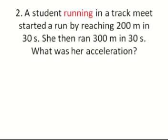Problem 2 is a bit more complicated. Number 2 says, a student running in a track meet started a run by reaching 200 meters in 30 seconds. She then ran 300 meters in 30 seconds. What was her acceleration?